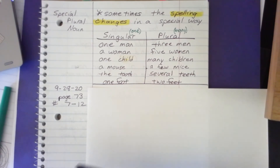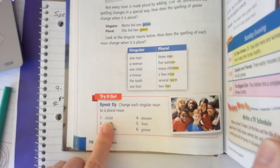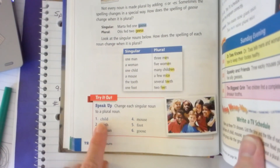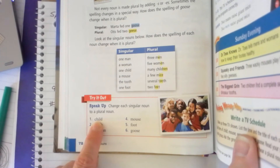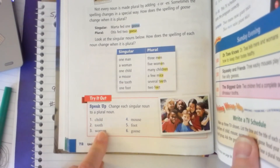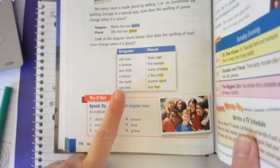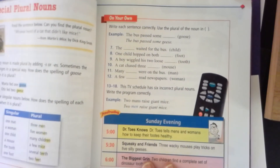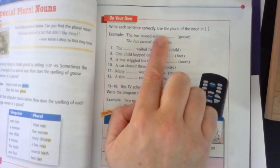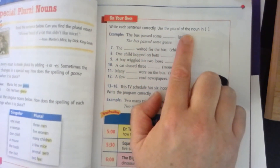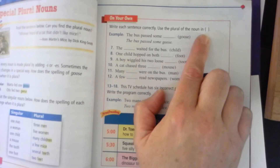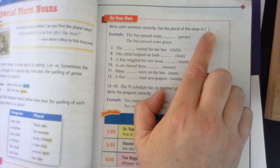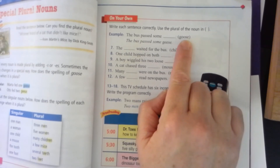Before we do that, let's try some of these on our own. On page 72, child is children — most of these we've just done. It says: write each sentence correctly, use the plural of the noun in the parentheses. So they're going to give us a word and we're supposed to write the plural.